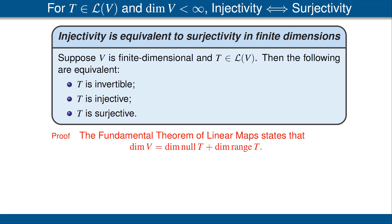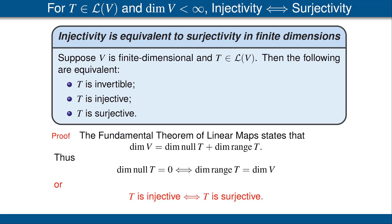Let's look at the idea of the proof of this remarkable theorem. The fundamental theorem of linear maps tells us that the dimension of V equals the dimension of the null space of T plus the dimension of the range of T. Thus the dimension of the null space of T is 0 if and only if the dimension of the range of T equals the dimension of V. The dimension of the null space of T being 0 is equivalent to T being injective. And the dimension of the range of T equaling the dimension of V means T is surjective, since the range of T is a subspace of V and equals V if and only if their dimensions match. Our conclusion is that T is injective if and only if T is surjective. See the rest of the details in the book.